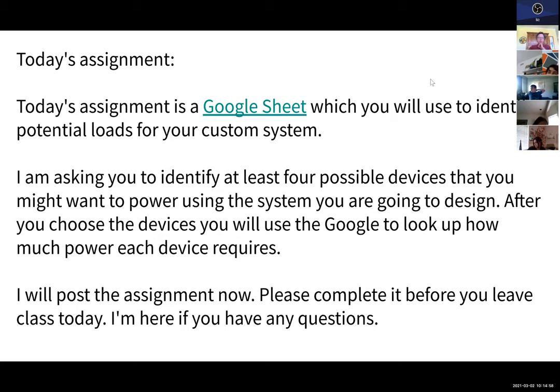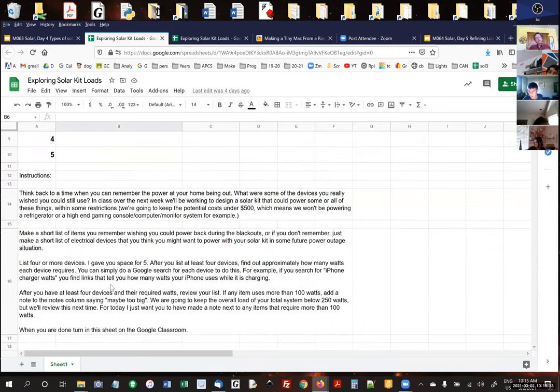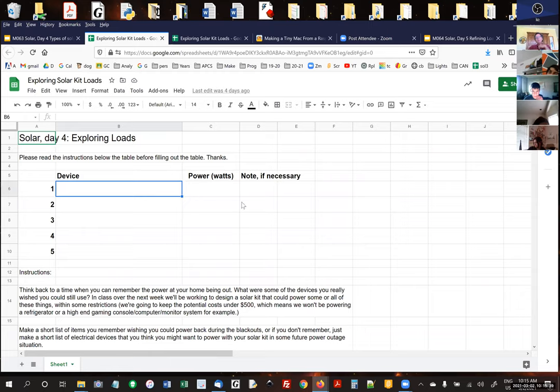I'll show you the Google Sheet and then I'll post the assignment. Here's what the Google Sheet looks like. It's called Solar Day Four Exploring Loads. There's space for you to write up to five devices and how many watts each device uses. I need both columns filled out. There's a bunch of instructions down here. I want you to read the instructions because if you pick something that requires too many watts, then I need you to leave me a little note here saying 'probably too big,' just to show me that you're paying attention.